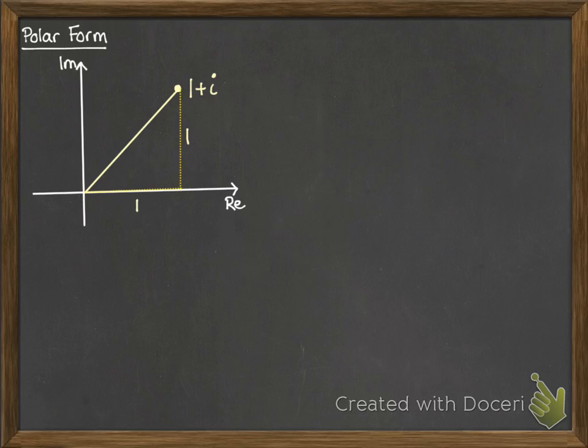We already know that means it's 1 away from the origin in each direction. We can find the modulus, so the length of that line being root 2. You've seen that already as well. We can also talk about this angle here, the angle that it is away from that x-axis. So in this case it would be pi by 4, which you can find by your basic trigonometry.